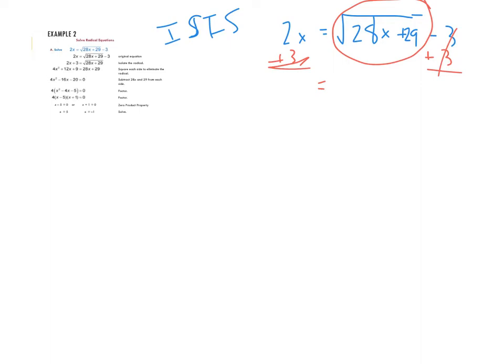Let's just do an example here. Let's go ahead and move that off to the side and really give ourselves some room to work with here. So the question was 2x equals square root 28x plus 29 minus 3. So remember, ISIS. The first thing I need to do is I need to isolate this radical. So the first thing I'm going to do is add 3 to both sides, and I get 2x plus 3 is equal to the square root of 28x plus 29.